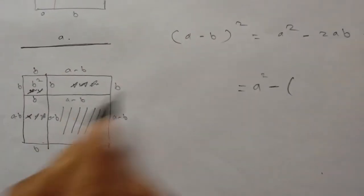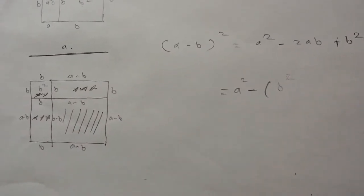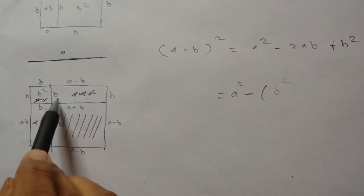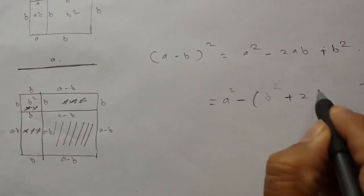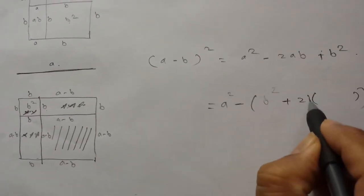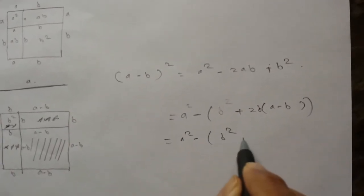So how do you find that? This is b squared, so we write b squared here. Then you have two times this area, which is plus 2 times b into (a minus b). This comes down to a squared minus b squared plus 2ab minus 2b squared. So since this is b squared minus 2b, we write 2ab minus b squared.